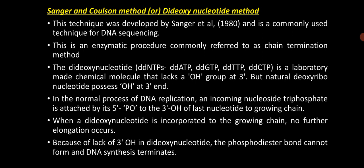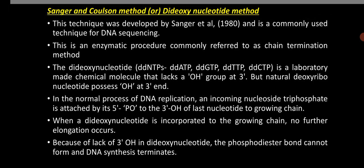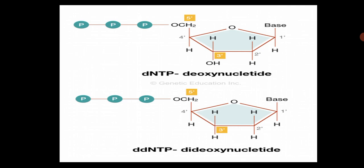In this method, dideoxy nucleotide triphosphates are used for all four bases: dideoxy adenosine triphosphate, dideoxy guanine triphosphate, dideoxy thymine triphosphate, and dideoxy cytosine triphosphate. The difference between deoxy nucleotide triphosphate and dideoxy nucleotide triphosphate is: in the deoxy nucleotide triphosphate, a hydroxyl group is present at the 3' carbon atom, whereas in the dideoxy nucleotide triphosphate, a hydrogen molecule is present instead of the hydroxyl group.